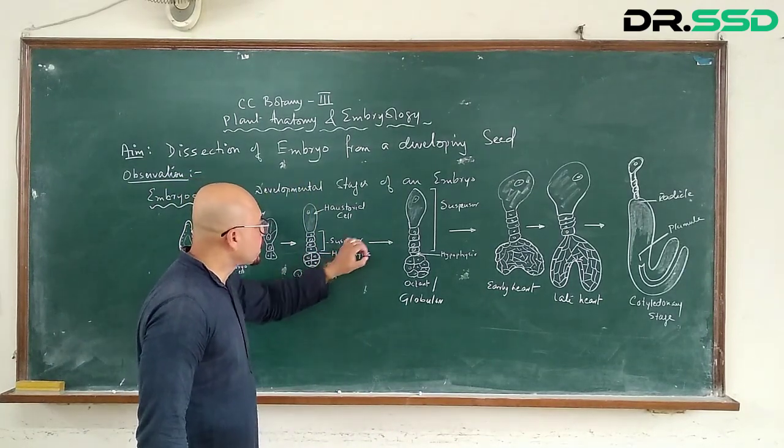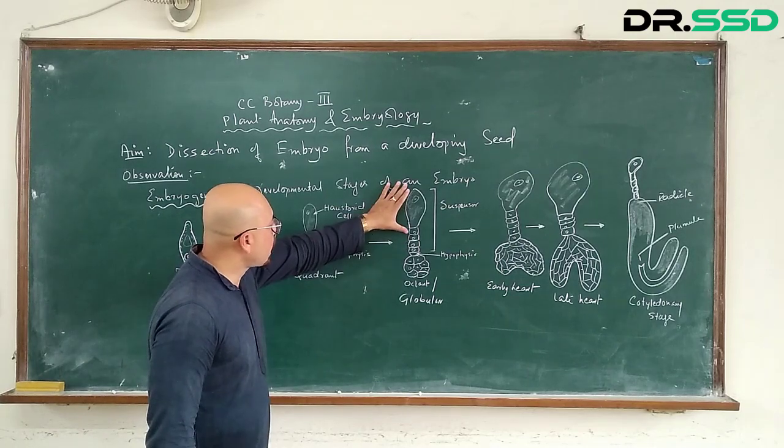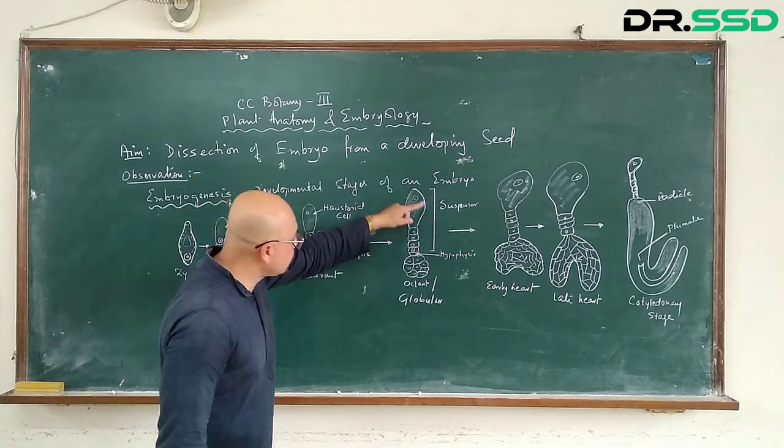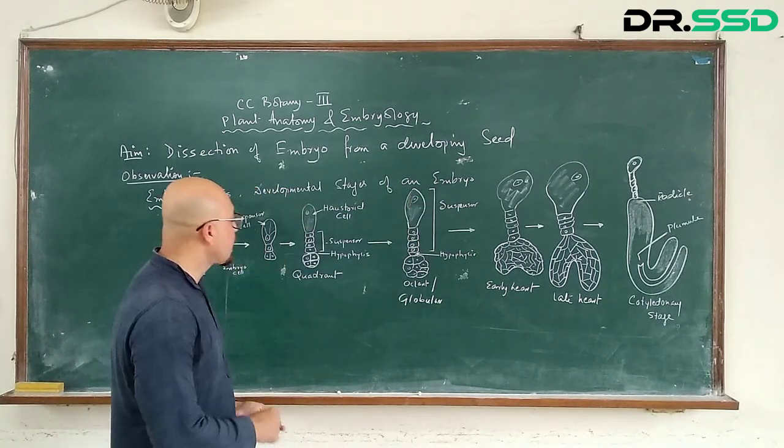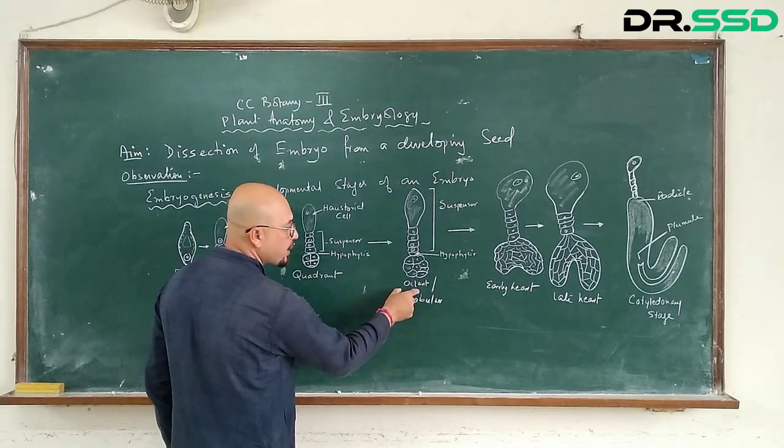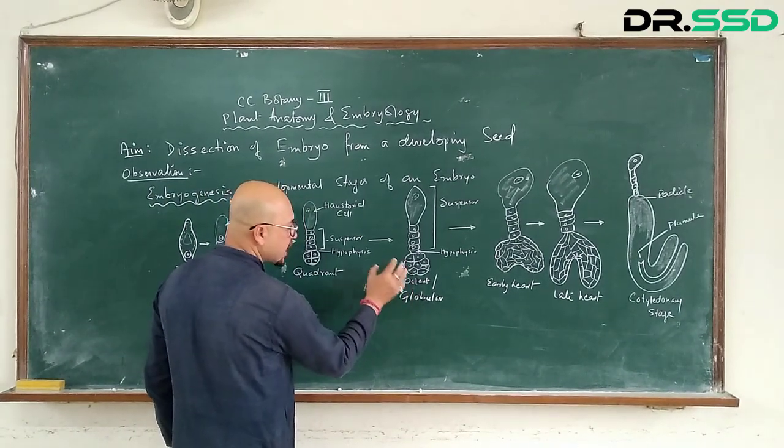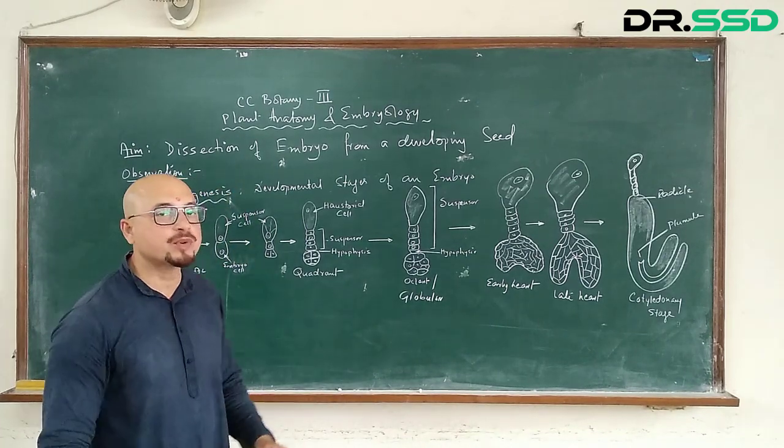Now this suspensor is eventually going to grow and you can see the haustorial cell, which is the entire thing called a suspensor, and the embryo has divided mitotically into the moment quadrant. There is an octant stage where you see that it has become almost globular.